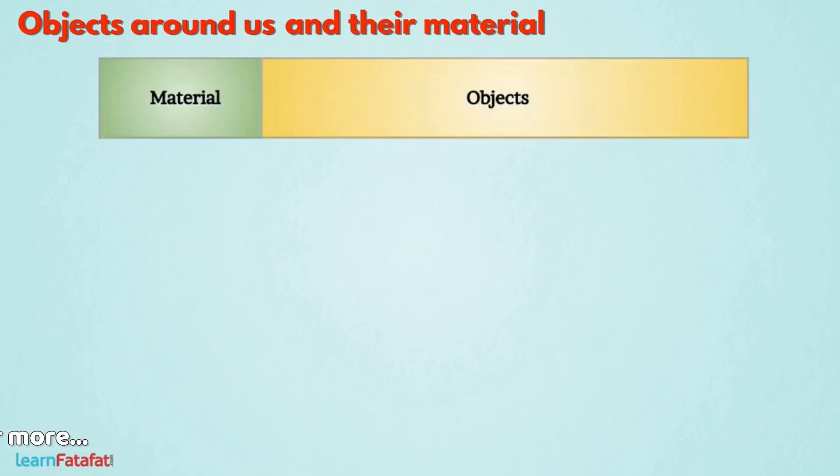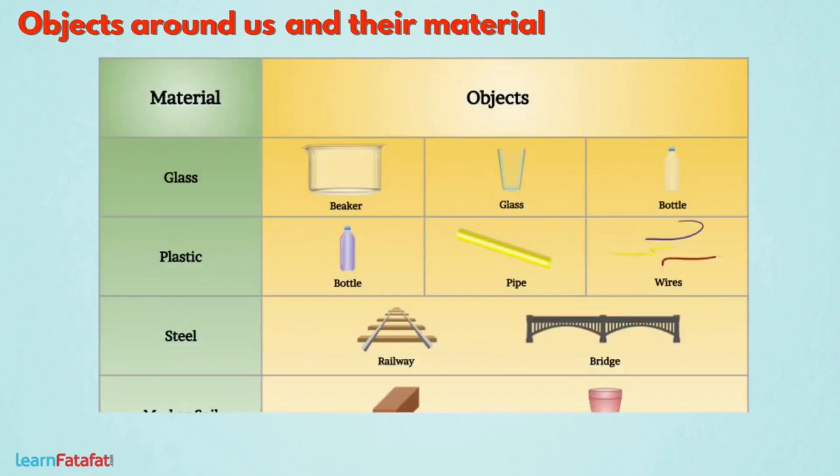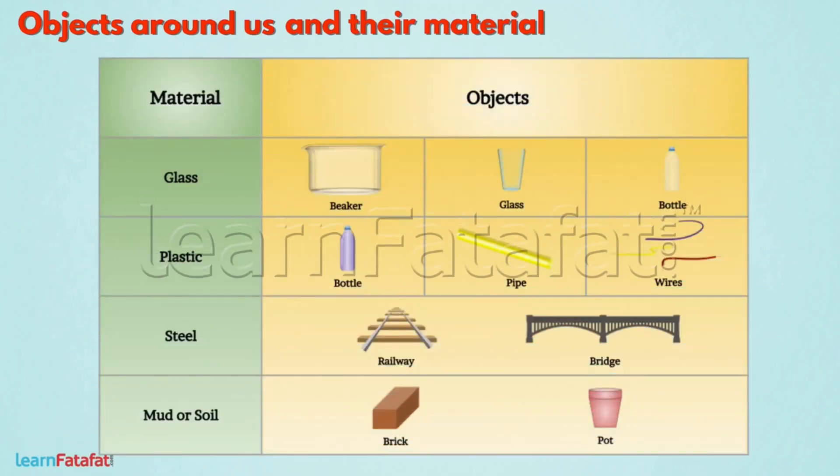Here is a table showing some of the materials and things produced from them. So, how can we classify objects?